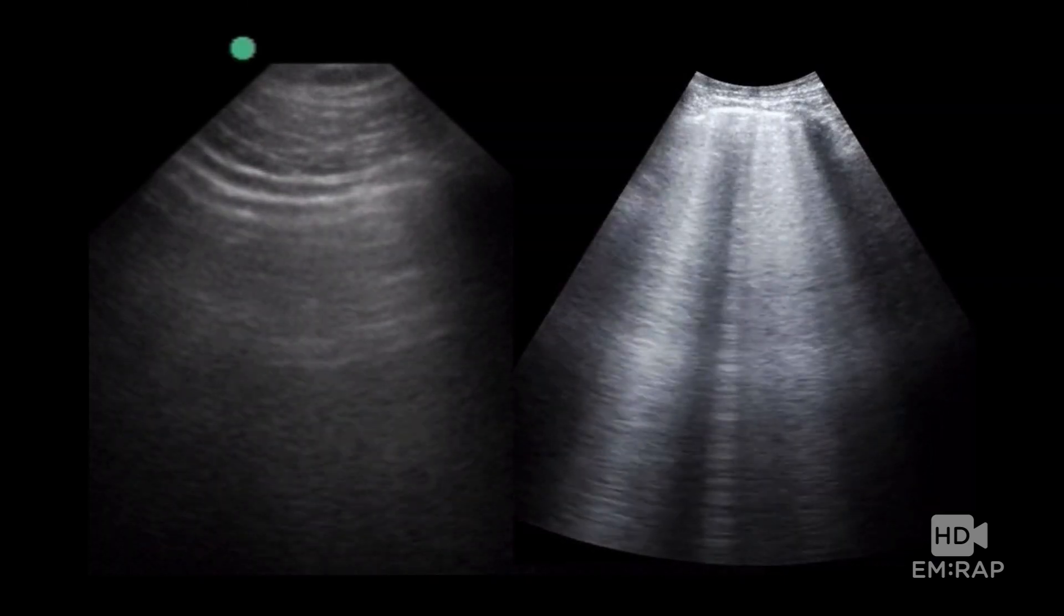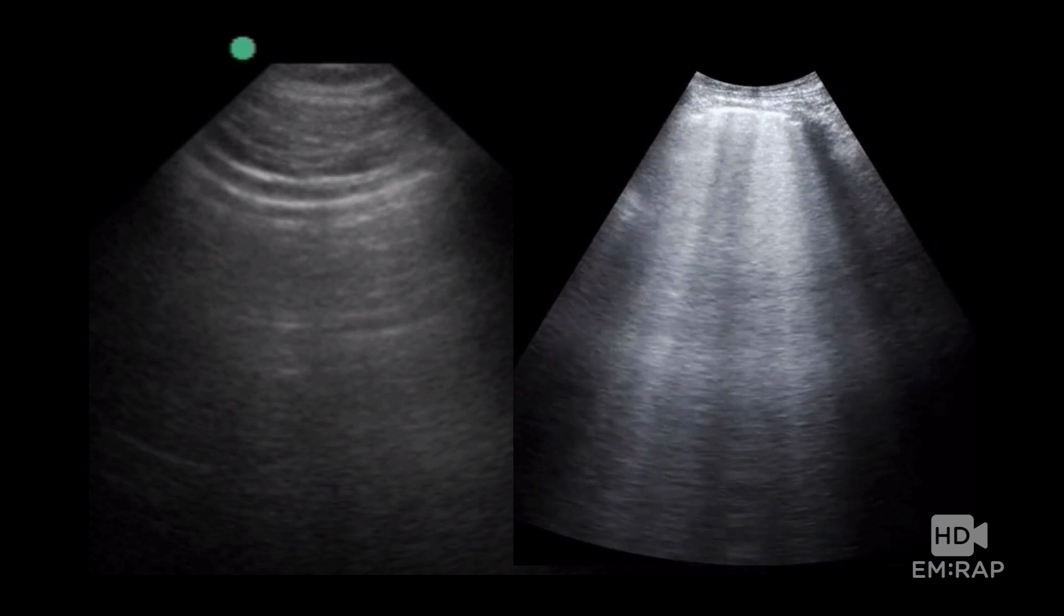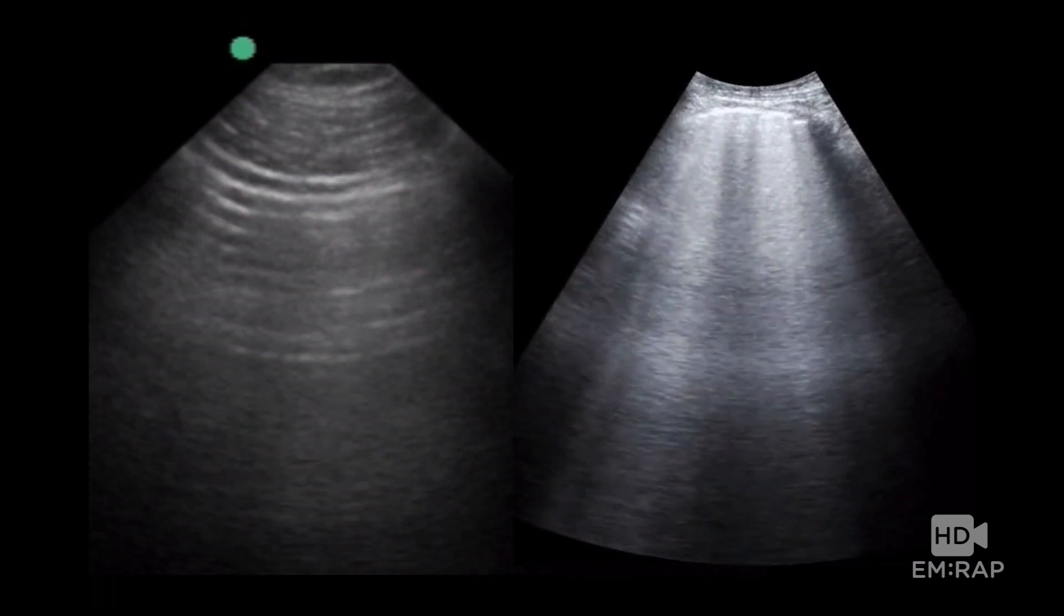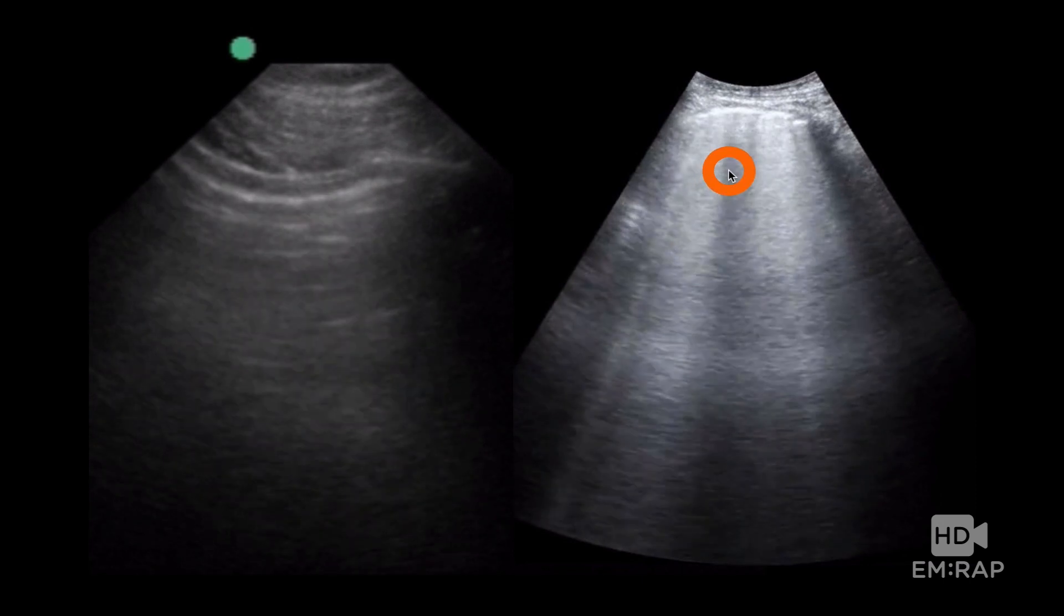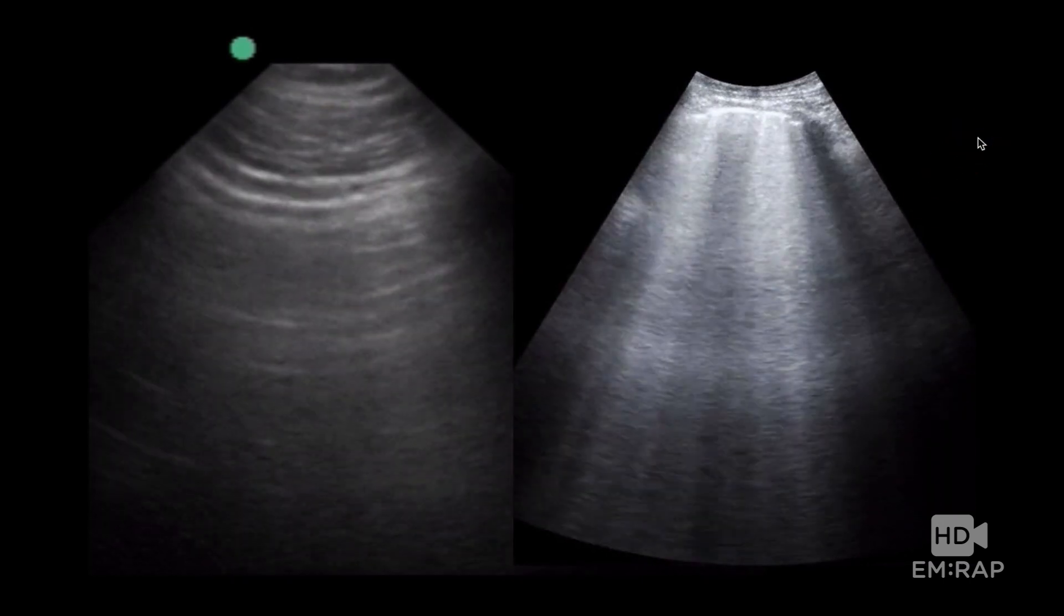Need those side-by-side? Here are two other examples. The clip on the left side of the screen doesn't have pulmonary edema. The one on the right has pulmonary edema. Here you have horizontal artifacts, A-lines, and here you have vertical artifacts. These are called B-lines.